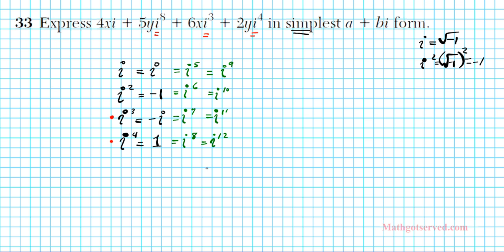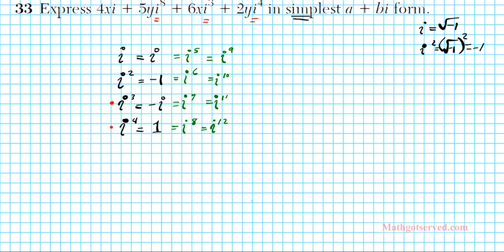Let's go ahead and simplify this expression. We're going to have 4xi. Now the power of i here is 1, so you leave it alone. 5y, i to the eighth is 1. As we can see here, i to the eighth is 1. So instead of i to the eighth, we'll replace that with 1 plus 6x. What is i to the third? i to the third is negative i.